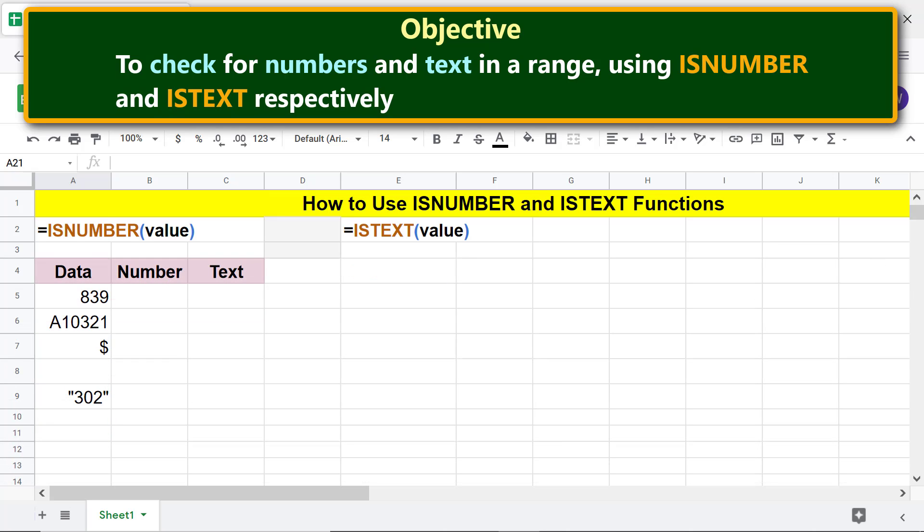Alright, let's begin by typing the ISNUMBER function formula. First, type equals I-S-N, select ISNUMBER. For value, click this cell, press Enter, click this cell.